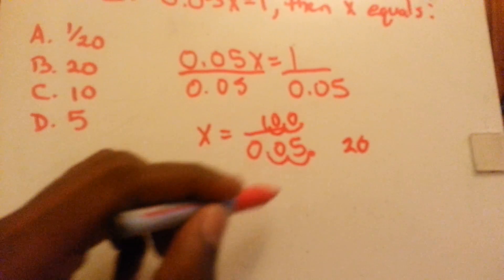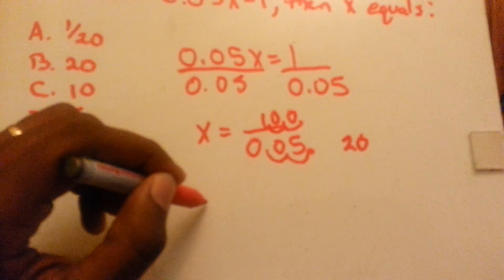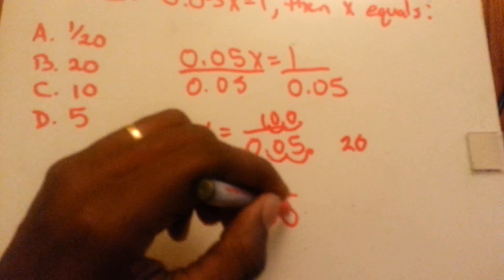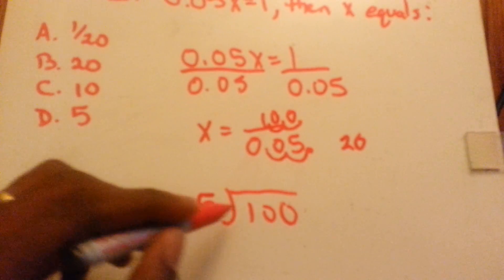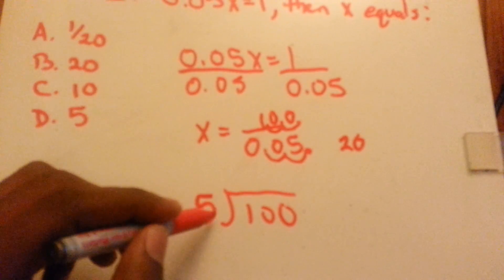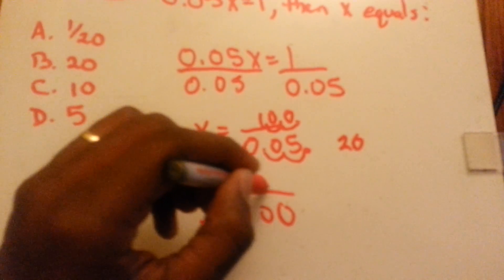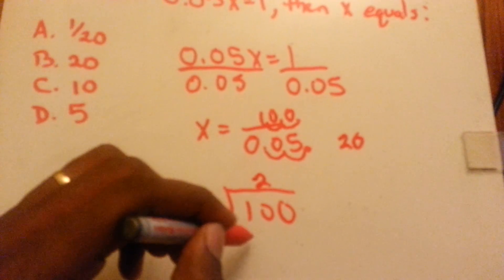So we have 100 divided by 5. 5 goes into 1, 0 times. 5 goes into 10, 2 times. 5 times 2 is 10,